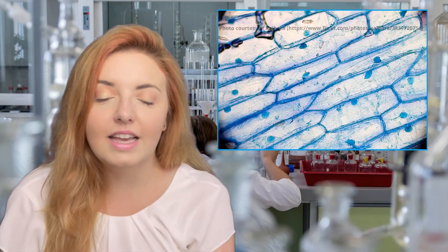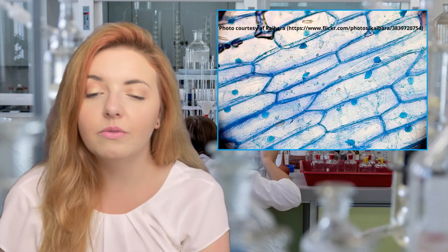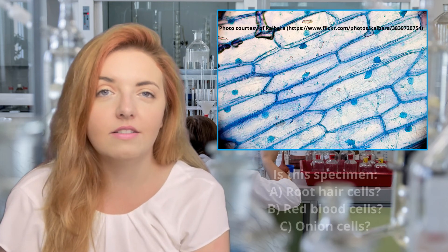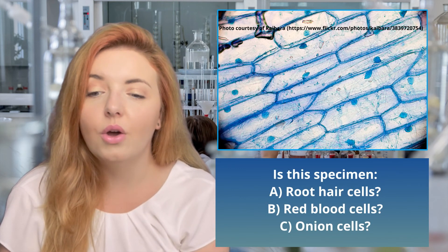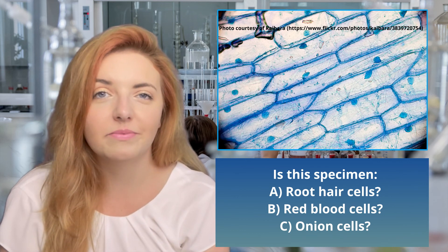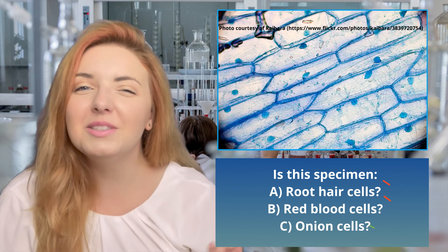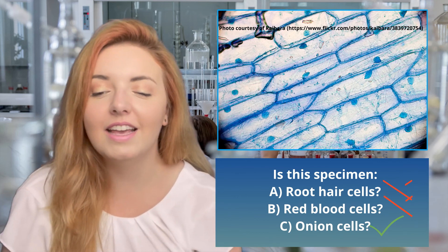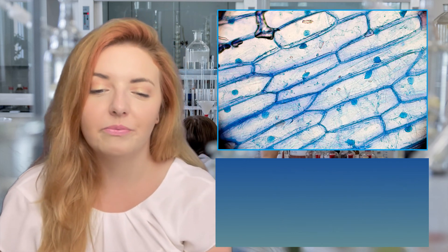Let's have a look at a specimen together. Is this specimen A: root hair cells, B: red blood cells, or C: onion cells? This specimen here is onion cells as seen through a microscope.